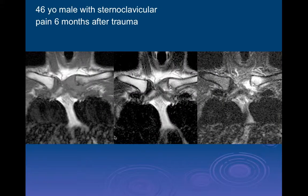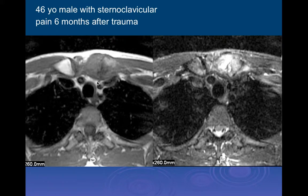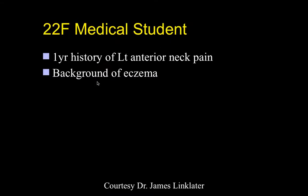Here's a 46-year-old male with sternoclavicular pain for six months after trauma. The left clavicle looks subluxed superiorly with respect to the right, with surrounding edema and a cortical defect along the inferior margin. This is at least a sternoclavicular separation with chronic instability six months post-injury. If it doesn't heal properly, you can end up with chronic instability and a chronic pain syndrome, so it's important to make the diagnosis in the acute stage and treat it properly.